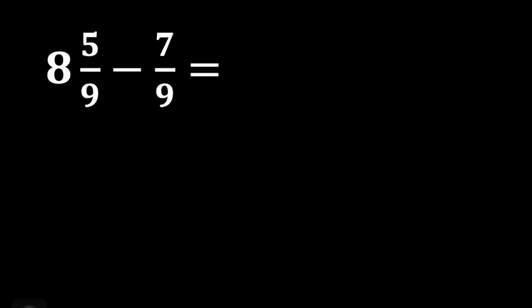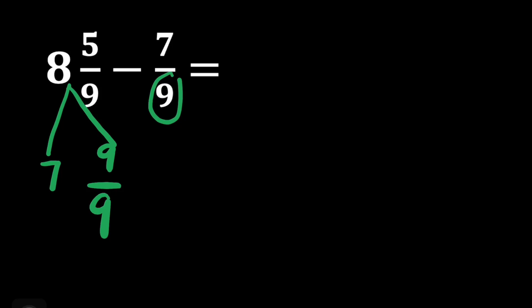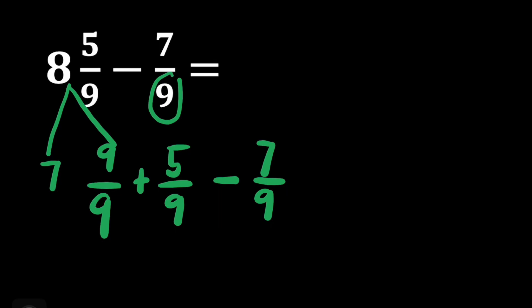We have another one: 8 and 5 ninths minus 7 ninths. This question is the same as the previous one. We cannot subtract 7 ninths from 5 ninths because 7 ninths is bigger than 5 ninths. So we will rename 8 — we'll subtract 1 from it, giving us 7. Then we will copy the denominator of our subtraction, it's going to be 9 ninths. We add the 5 ninths because it's still part of our minuend. Then subtract 7 ninths. So 7 and 9 ninths plus 5 ninths gives us 7 and 14 ninths minus 7 ninths.